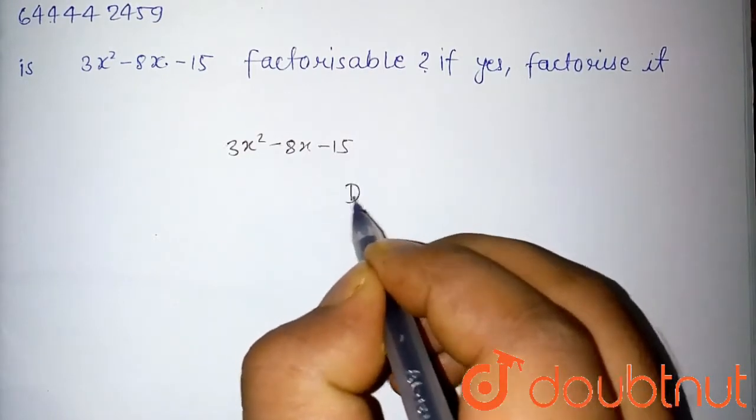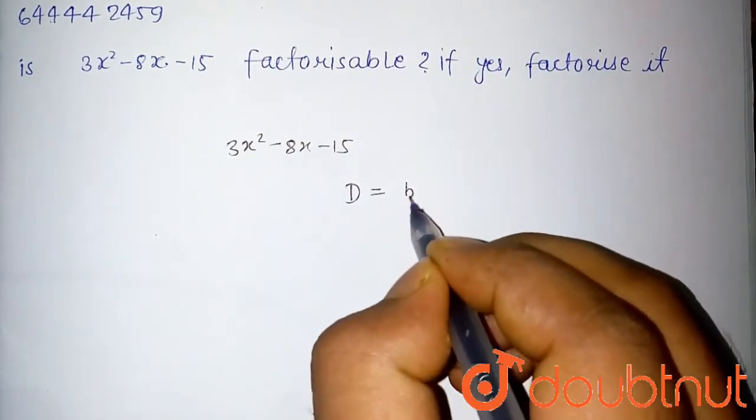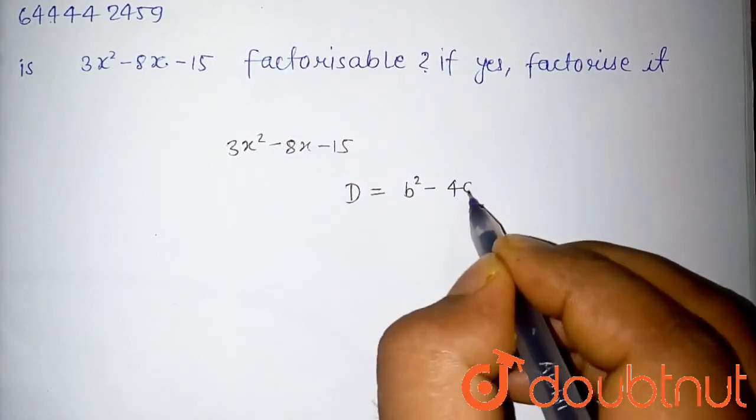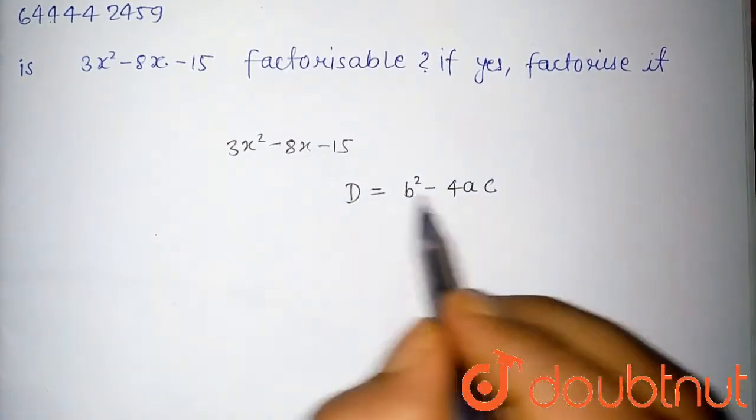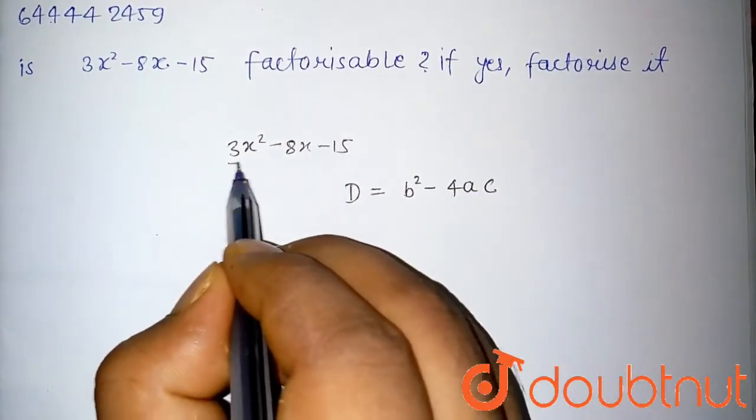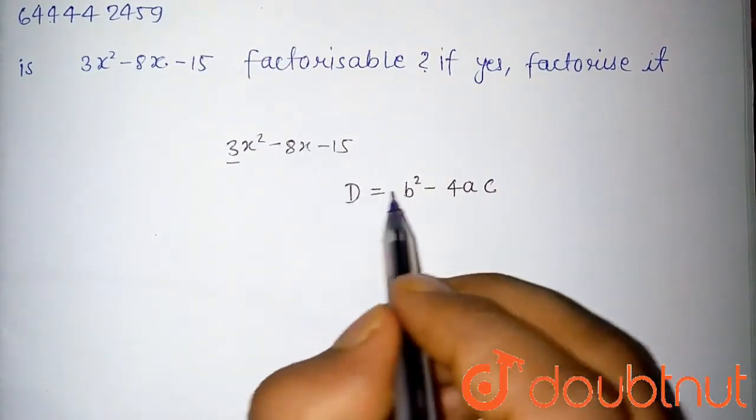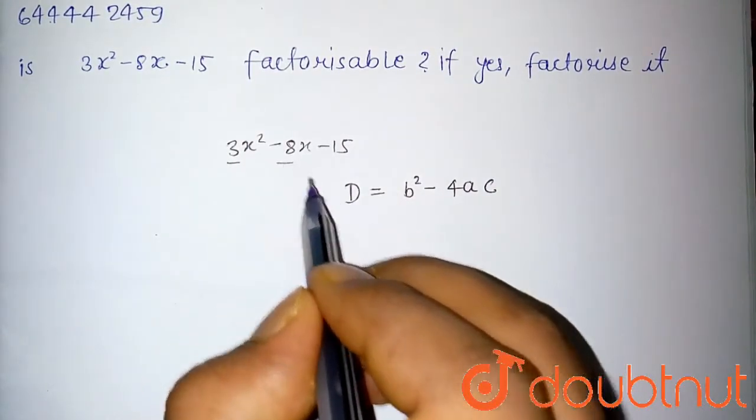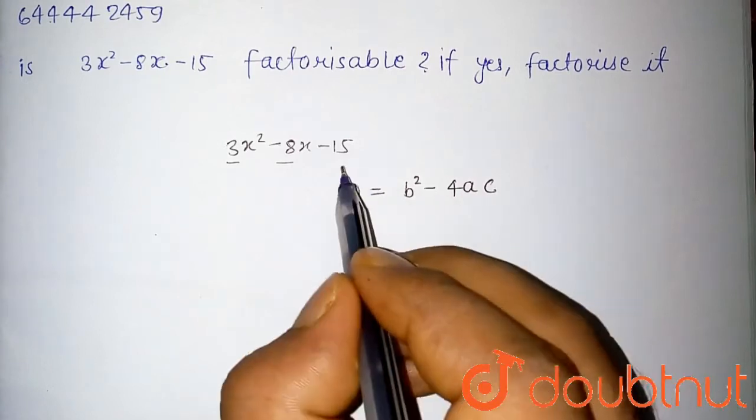And discriminant, D is defined as D equals b² minus 4ac. Here a is coefficient of x², b is coefficient of x and c is constant.